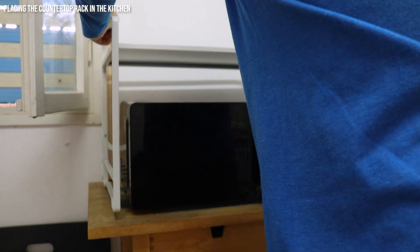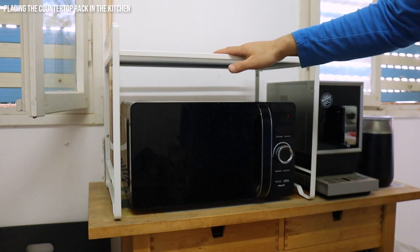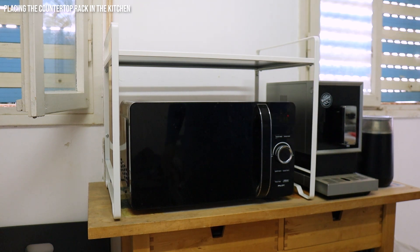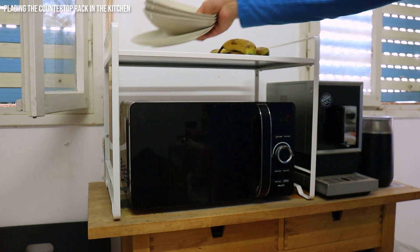The space under the rack is suitable for a microwave, in this case a 20-liter microwave, a toaster oven or other kitchen appliances. On the shelf you can put cups, glasses, spices or anything else up to 15 kilos.